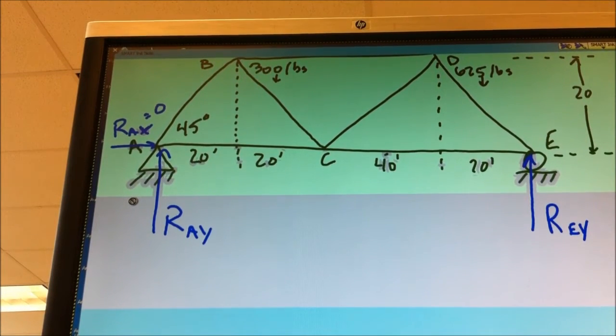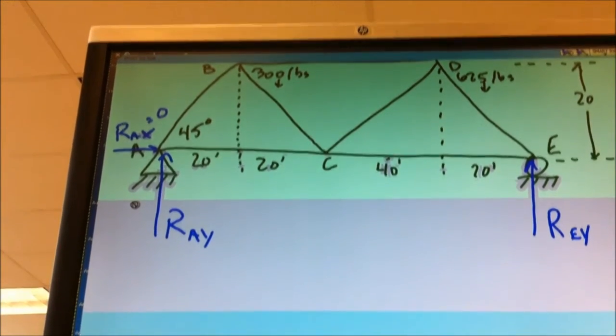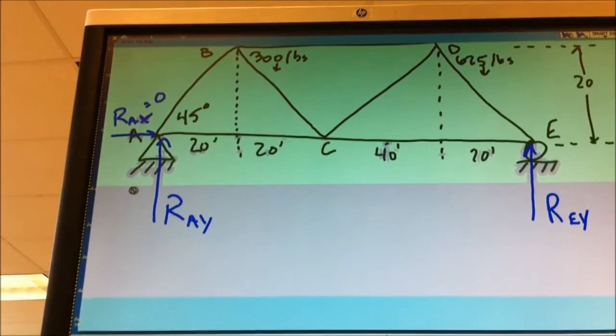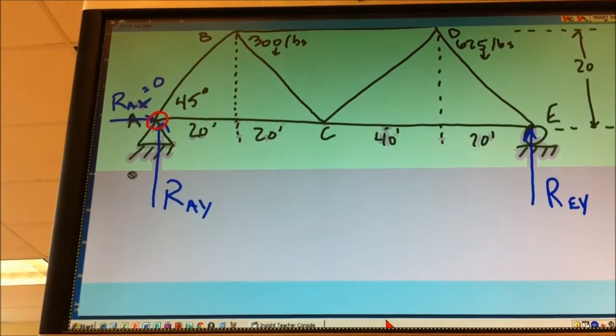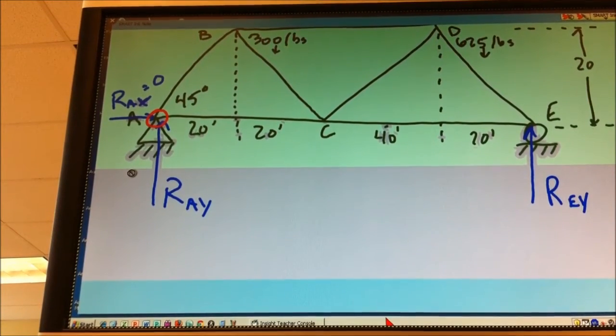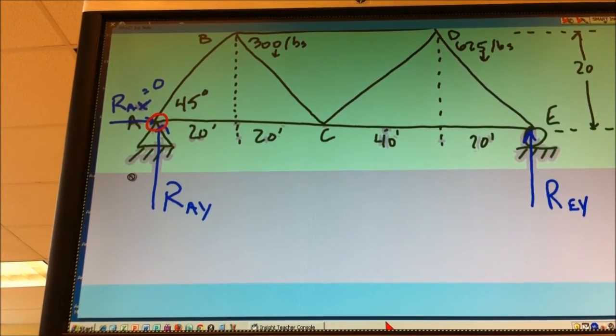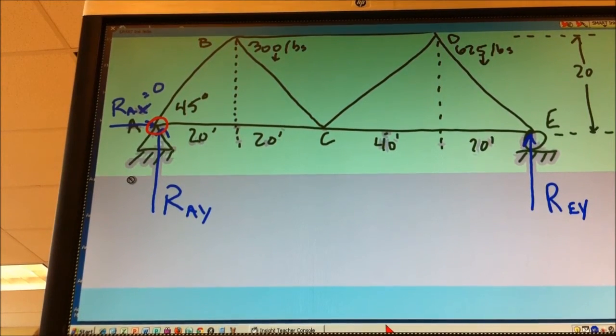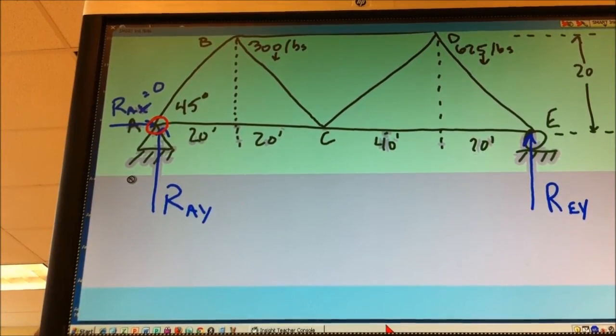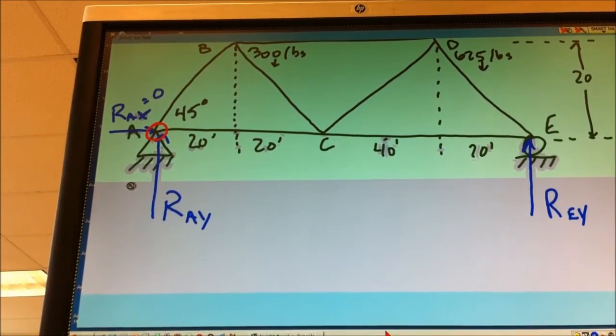Now let's go ahead and solve for R_EY. Right. So if I'm going to solve for R_EY, what am I going to set as my pivot point? A. Point A. So point A right here is going to be my pivot point. How many moments do we have to deal with here? At point A? Yeah, if point A is our pivot point, how many moments are we going to deal with? Three. We're going to have a moment at B, a moment at D, and a moment at E.